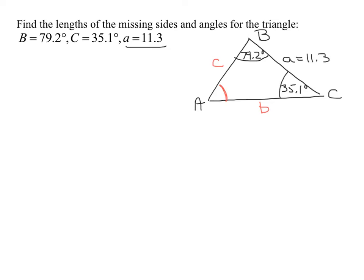The things I can use to solve an oblique triangle are the sum of the angles equals 180 and the law of sines and cosines. I'm given two angles, so I'm going to find the third angle, angle A, using the sum of angles equals 180. So A is 180 minus 79.2 degrees minus 35.1 degrees, which equals 65.7 degrees.